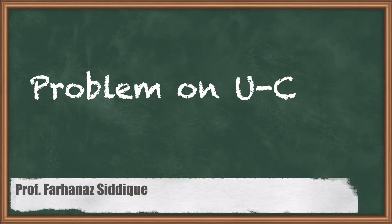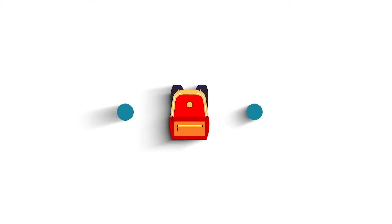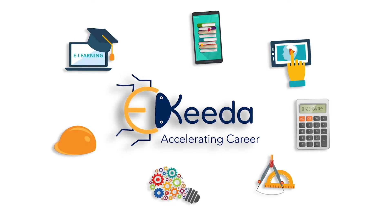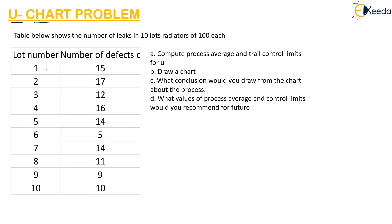Hello students, today let us learn a problem on U-chart. Here they have given a table with number of leaks in 10 lot radiators of 100 each. The number of lots is 10, so m equals 10, and the sample size n equals 100.